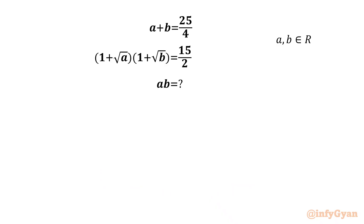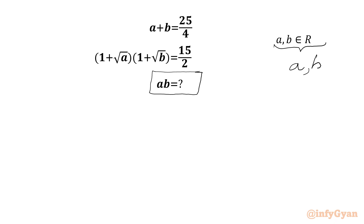We have a plus b equal to 25 over 4, and (1 plus √a)(1 plus √b) = 15 over 2. We have to find the value of ab, given that a and b are real numbers. Since √a and √b are involved, a and b must be positive numbers.